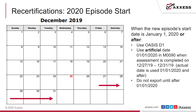However, if it's a recertification with a 2020 episode start date — in other words, the from-date is January 1st, 2020 or after — you will use the OASIS D1 and you're going to use an artificial date of 1-1-2020 in M90 when that assessment is completed somewhere between the 27th and the 31st of 2019. If you actually complete the OASIS on January 1st or after, use the actual date. Regardless, you won't want to export these OASIS D1 assessments until January 1st, 2020 or after.